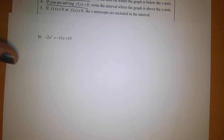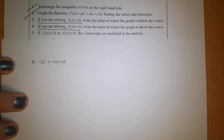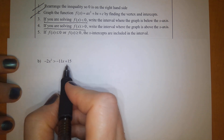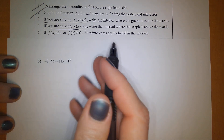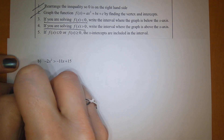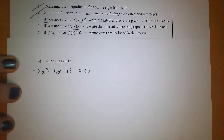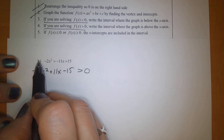We'll try two more examples. Here we have negative 2x squared is greater than negative 11x plus 15. Recalling the instructions, we rearrange so that 0 is on the right-hand side. So we move everything to the left: negative 2x squared plus 11x minus 15, and this must be greater than 0.